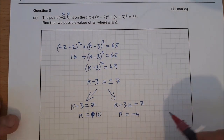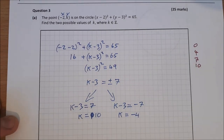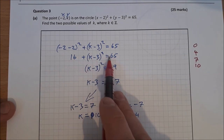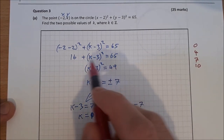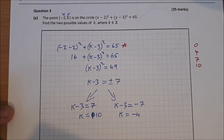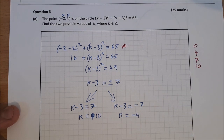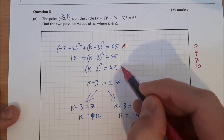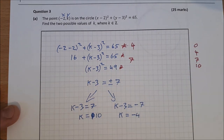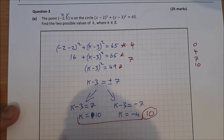For the marks on this question, you're getting either 0, 4, 7, or 10. Zero marks for nothing right. Four marks for some substitution into the equation, or for something to do with the center or radius. Seven marks for having an equation in k². Ten marks for both correct answers.